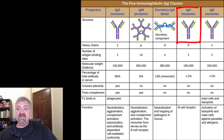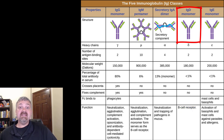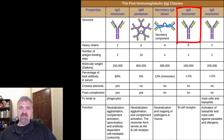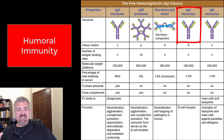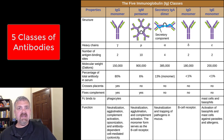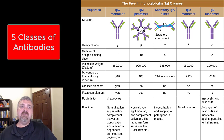Last, we have IgD. These are going to be found on the surface of B cells — they're actually just a receptor on B cells — and they play a major role in the sensitization of B cells. Your immune system is dominated by B cells and T cells. B cells control humoral immunity, and IgD antibodies play a major role in sensitizing those B cells. So those are your five classes of antibodies: GAMED, G-A-M-E-D. All right, have a wonderful day. Be blessed.